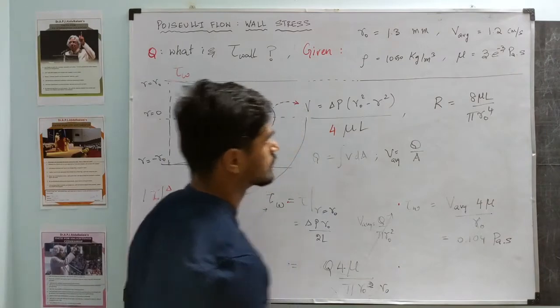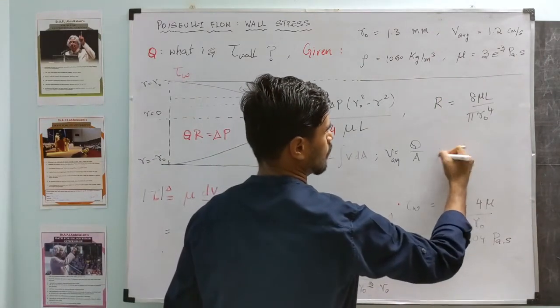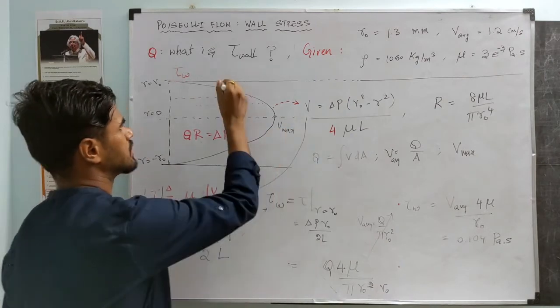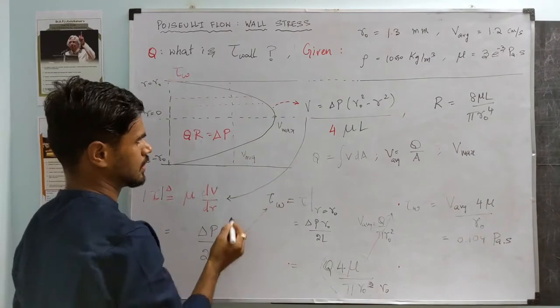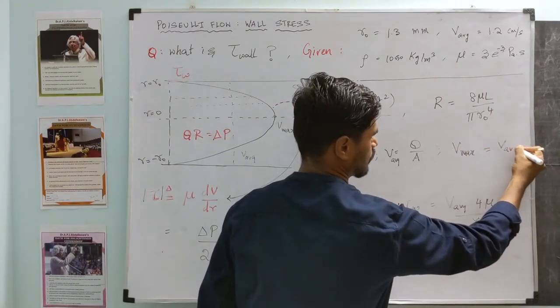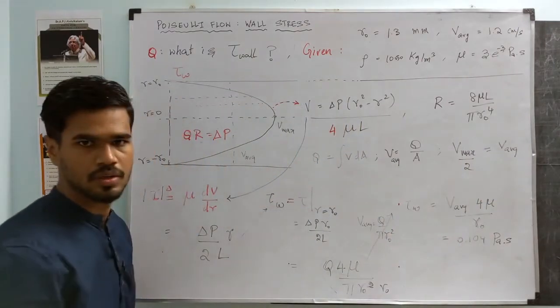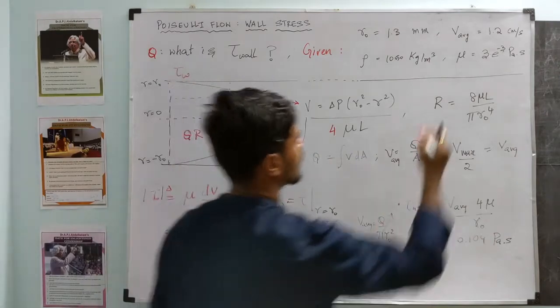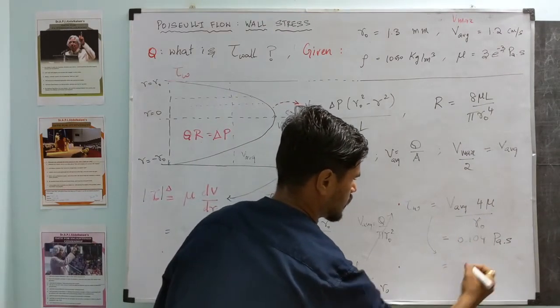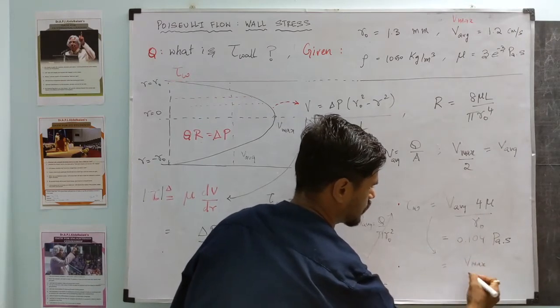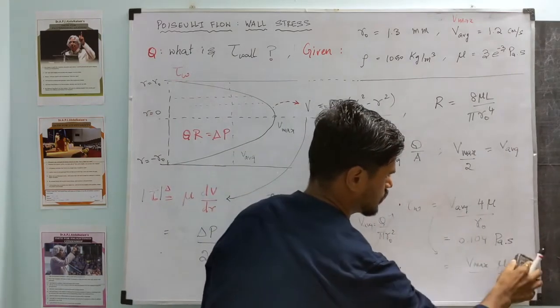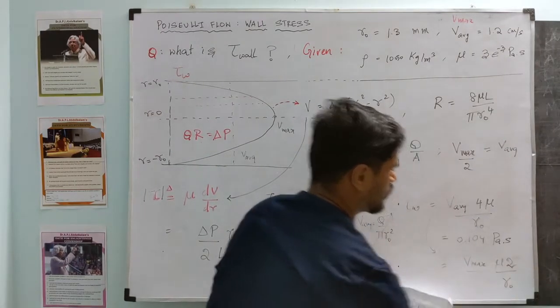And before I finish, say in case the question had information on v_max instead of v_avg - so we are given what is the maximum value of velocity instead of what is the average value of velocity. In that case, because it's a parabolic profile, v_max and v_avg are related by a factor of 2. So in this question, instead of v_avg, say we had v_max, we can still answer that and that expression is going to be (v_max/2)·(4μ/r₀), so this 2 and 4 becomes 2μ·v_max/r₀.